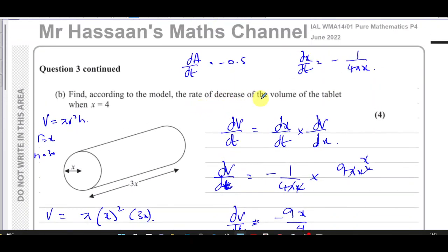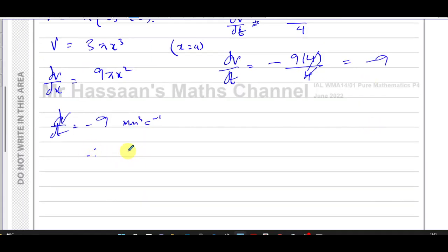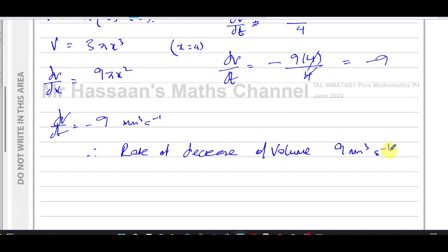The question says find the rate of decrease of the volume. When they say 'rate of decrease,' I don't write the negative sign — the rate of decrease of the volume is 9 millimeters cubed per second. dV/dt is negative 9, meaning the volume is decreasing at a rate of 9 millimeters cubed per second. If they ask for the rate of decrease, write it as a positive value, because 'decrease' already means it's going down.